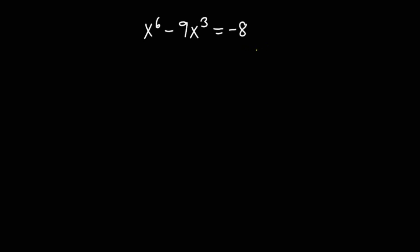To present the solution, the first step is to identify the term with the least exponent. Obviously, that is going to be 9x cubed, because between 9x cubed and x exponent 6, 9x cubed has the lowest exponent, which is 3, whereas the other is 6.